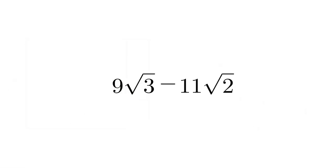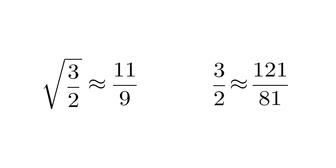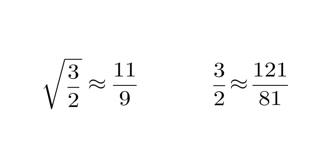Nine root three minus eleven root two is so small that you might say it's approximately zero. And consequently, nine root three is approximately eleven root two. Now doing just a little bit of algebra reveals that the square root of three halves is approximately eleven ninths. Now, eleven ninths squares to 121 over 81. And three halves is exactly 120 over 80. So what we found here is an exceptionally good rational approximation to the square root of three halves.